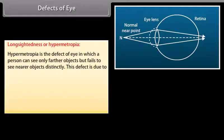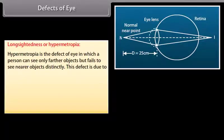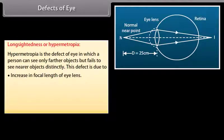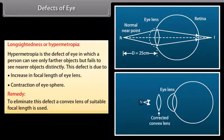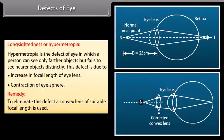Hypermetropia, or long-sightedness, is a defect in which a person can see only farther objects but fails to see nearer objects distinctly. This is due to an increase in focal length of the eye lens or contraction of the eye sphere. Remedy: a convex lens of suitable focal length is used.